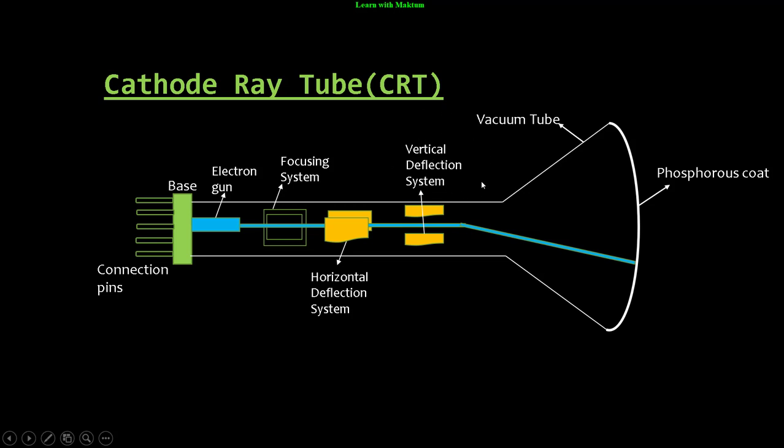How actually the cathode ray tube works is: we provide power supply to the connection pins. Inside this electron gun, there is a coil, a filament. When we supply power to it, it will start to heat up. Once it starts to heat, it will release electrons.